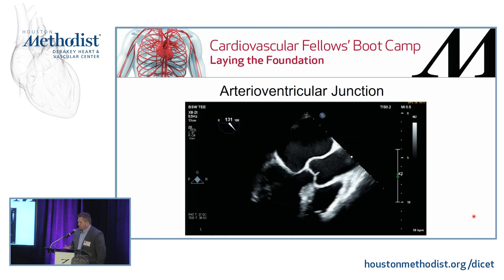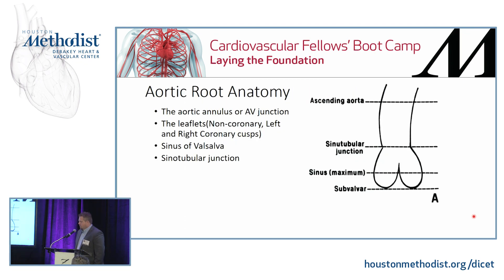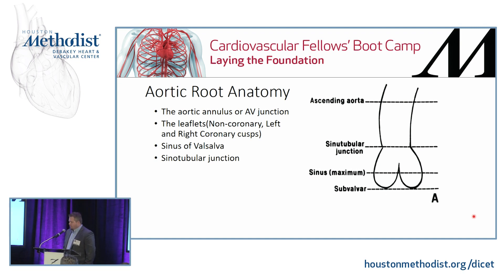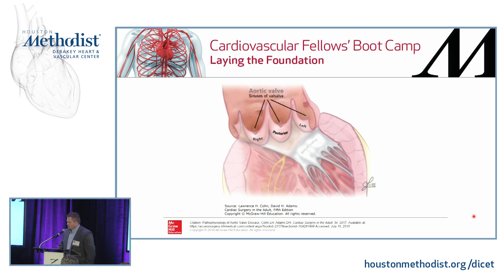We have multiple components of the aortic valve complex, or aortic root. Starting with the arterioventricular junction — essentially the transition zone from the left ventricle into the aorta — we get to the aortic root, which is composed of the aortic annulus or AV junction, the leaflets (non-coronary, left, and right coronary cusps), the sinus of Valsalva where coronary arteries take off, and distally the sinotubular junction — the transition point to the ascending aorta.